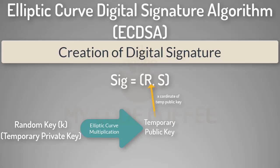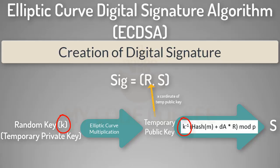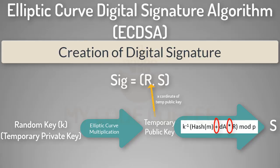The third step is to calculate the s value of the digital signature using the equation: s = k⁻¹ × (m + r × d) mod p, where k is the temporary private key, r is the x-coordinate of the temporary public key, d is the private key of the signer, m is the transaction data or message, and p is the prime order of the elliptic curve. The addition and multiplication here are elliptic addition and elliptic multiplication, not normal arithmetic. The k⁻¹ here is the modular multiplicative inverse of k — a number such that k⁻¹ × k ≡ 1 mod p.